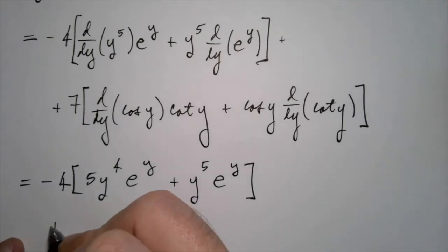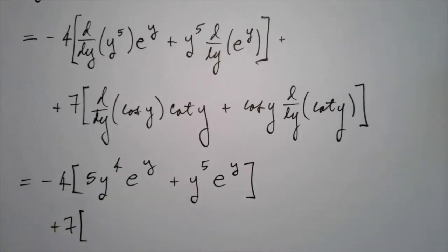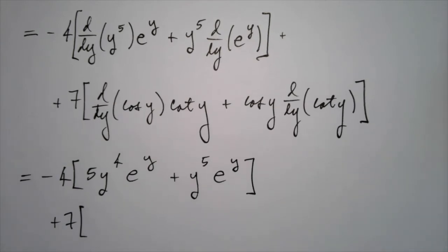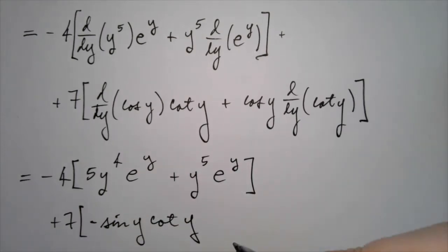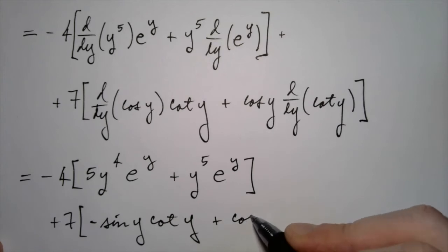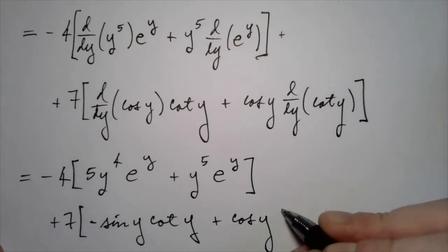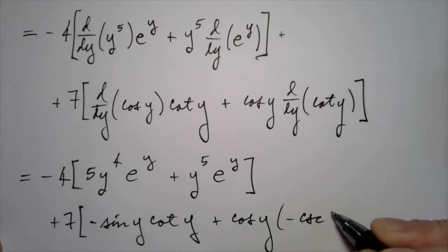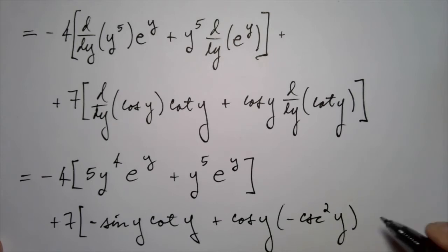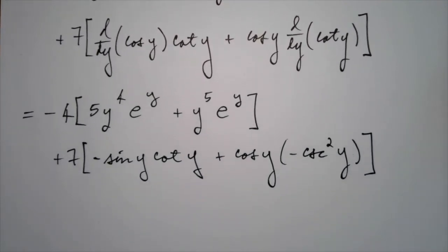Next up, we have the other piece. Derivative of cosine, that's minus sine. And we're multiplying it by cotangent. And then for the second piece, we have cosine. And then we need to multiply by the derivative of cotangent. The derivative of cotangent is minus cosecant squared. So there, I've just used the derivative of cotangent.